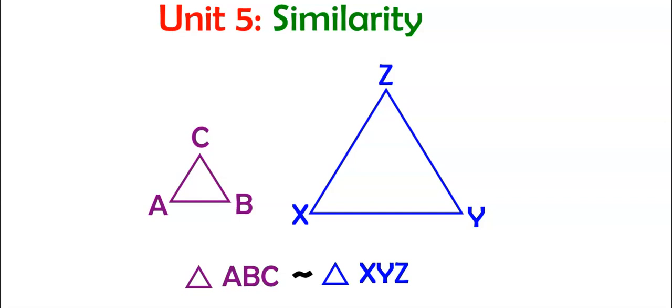Everyone, this is the beginning of unit five and unit five is all about similarity. So we have the purple triangle ABC and the blue triangle XYZ, and this little similarity sign here, kind of like the top of the congruent symbol. So the congruent symbol without the equal sign. Triangle ABC is similar to triangle XYZ.